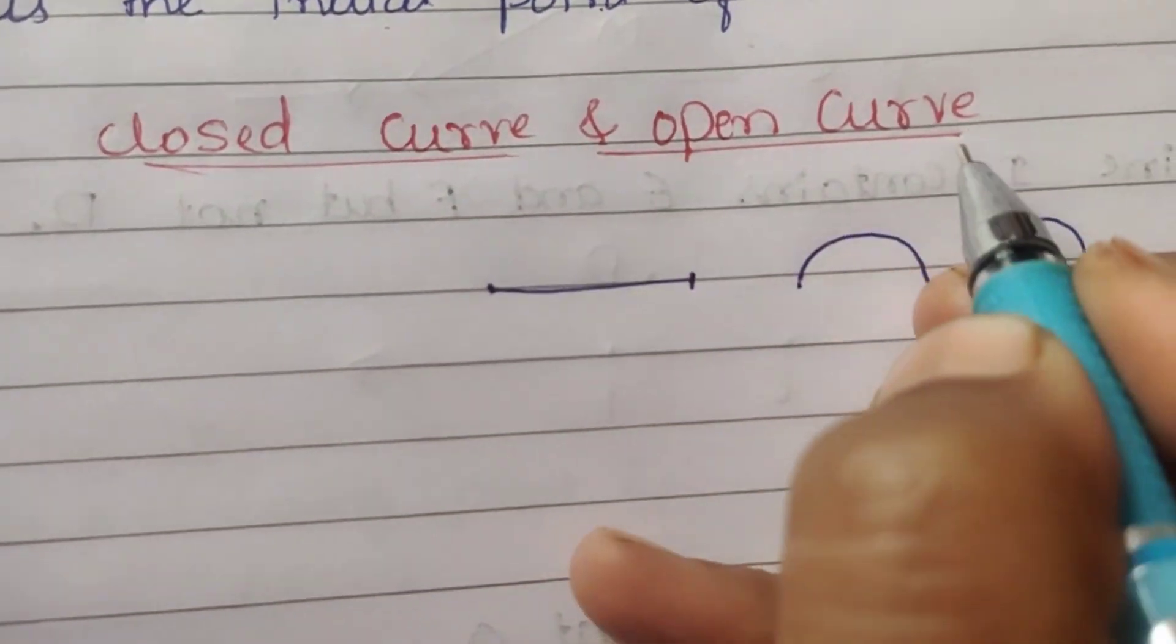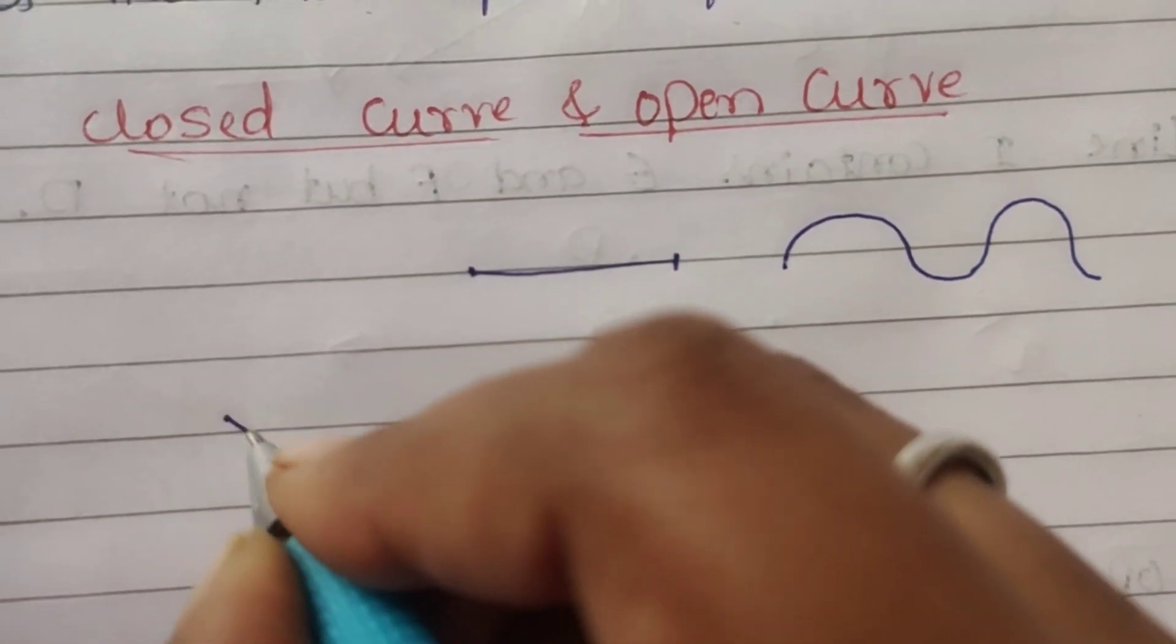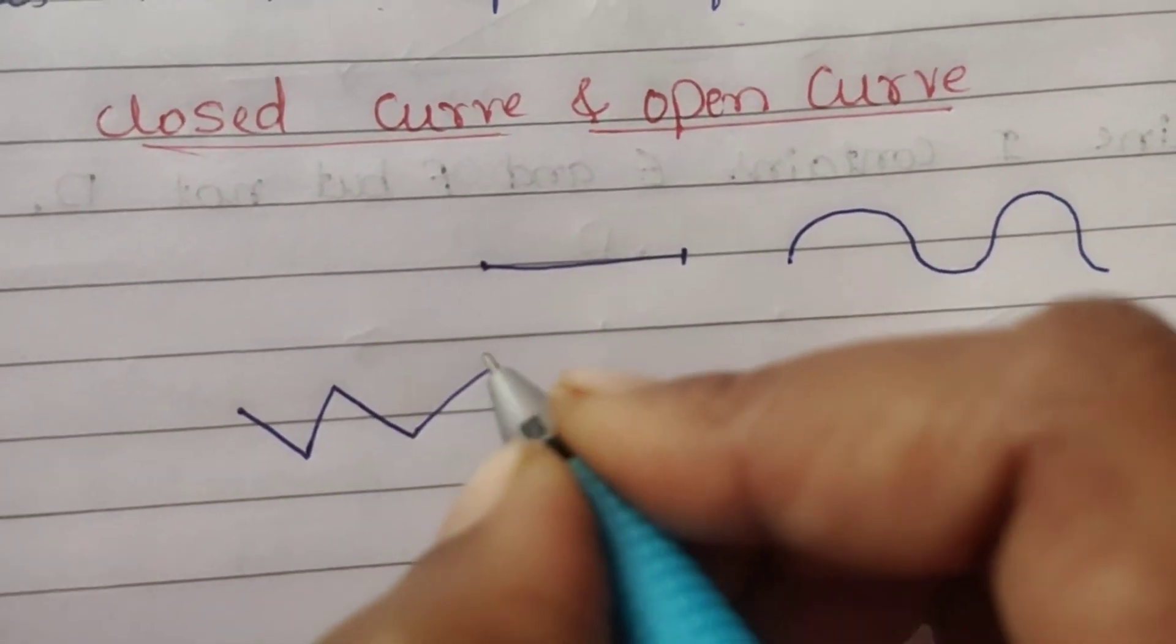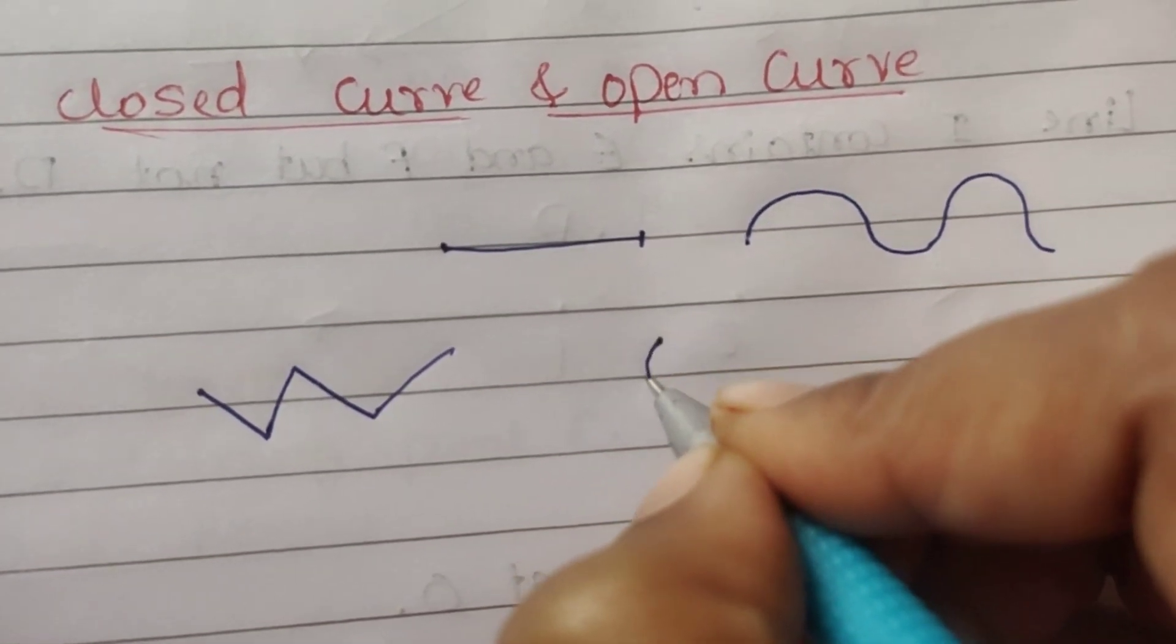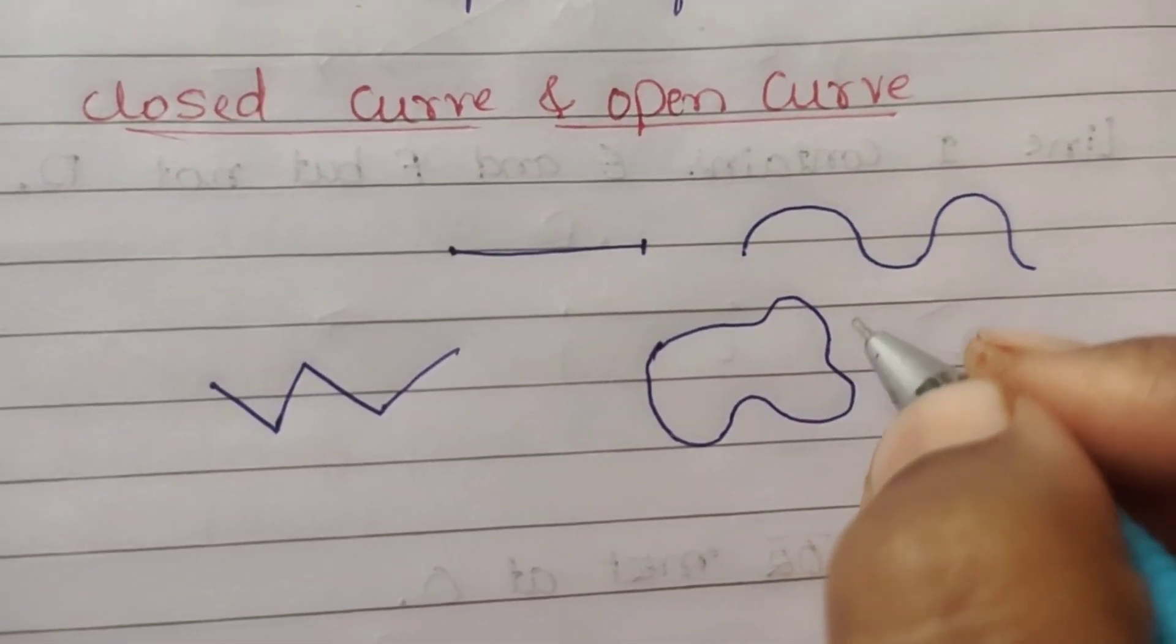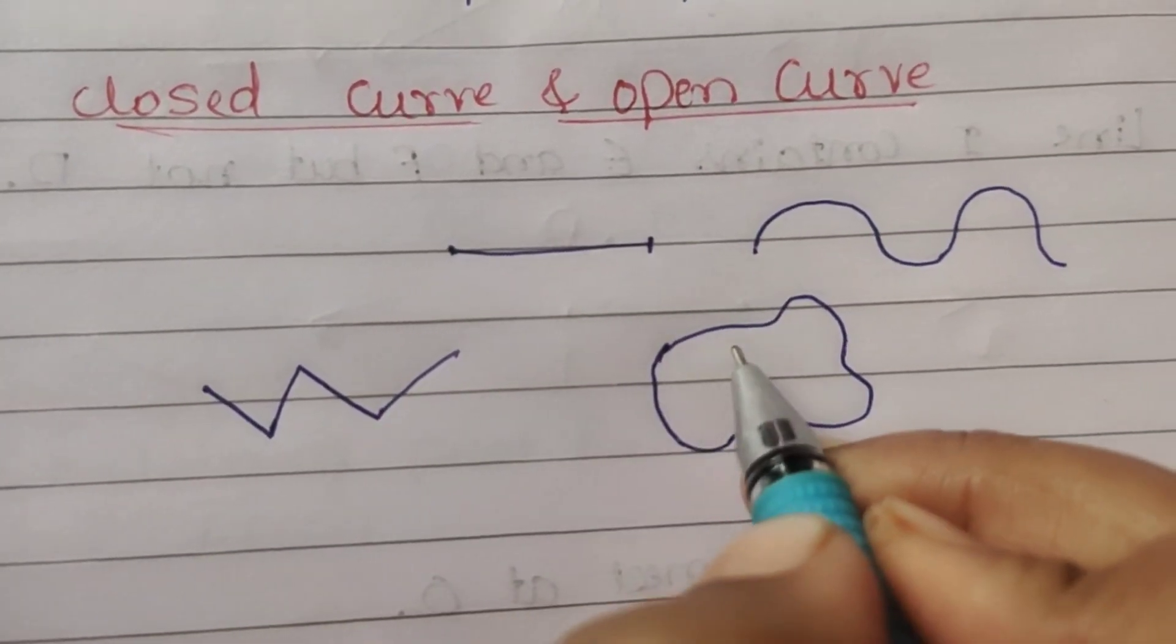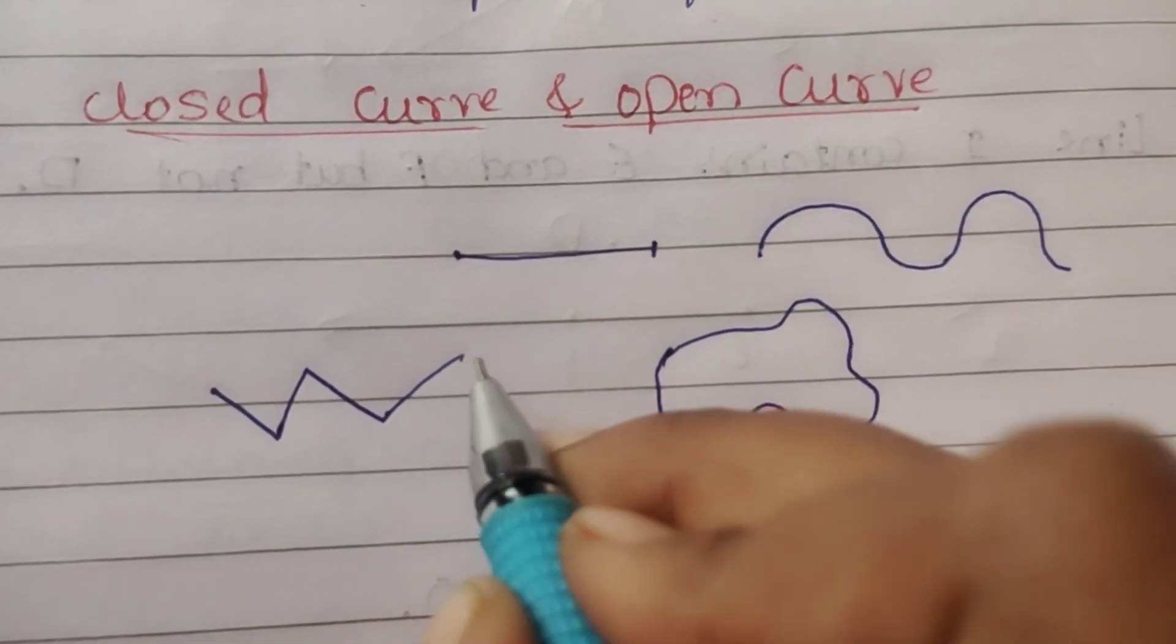Closed curve and open curve. Open curve has a starting point here and ending point here. Closed curve also has a starting point and ending point, but they meet.